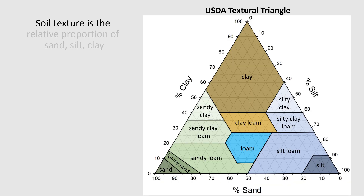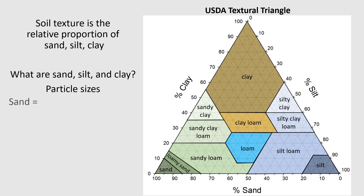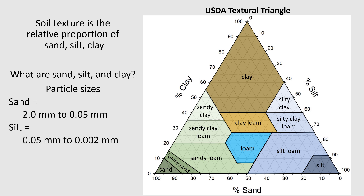So again, what is soil texture? It is the relative proportion of sand, silt, and clay. Now we have a definition. Looking at this soil texture triangle, around it we see the words clay, silt, and sand — and remember, those are particle sizes. Sands are the biggest particles, silts are the intermediate-sized particles, and clays are the super tiniest particles.